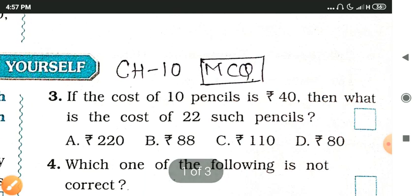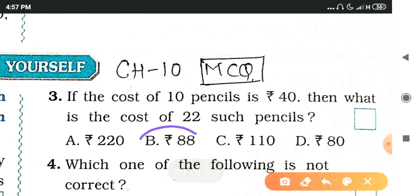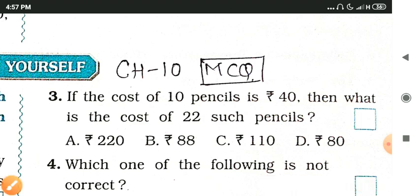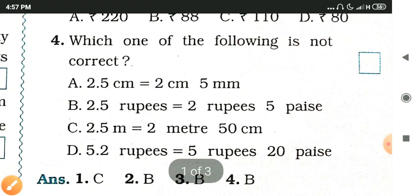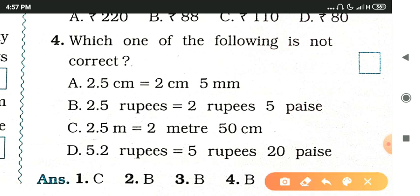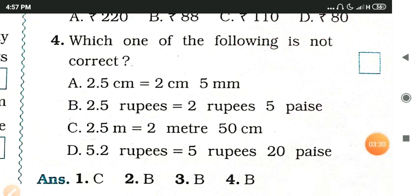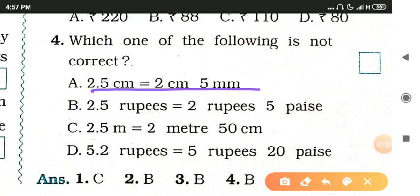The answer is 88 rupees, so option B is correct. Next question: which of the following is not correct? The first option states 2.5 centimeters equals 2 centimeters 5 millimeters — this is right.